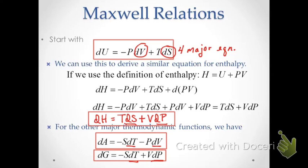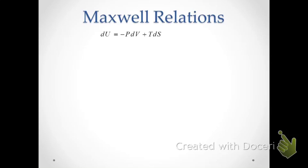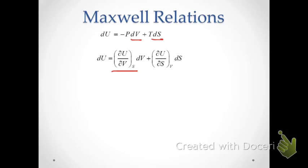Now we have these four thermodynamic properties. Going back to the fundamental equation for internal energy, which expresses changes in terms of volume and entropy, and using basic mathematical relationships, we know that we can write internal energy changes in terms of partial derivatives. Since we're basing changes on volume and entropy, we have a partial derivative expressing the rate of change of internal energy with respect to volume holding entropy constant, and a similar relationship giving internal energy changes with respect to entropy holding volume constant.